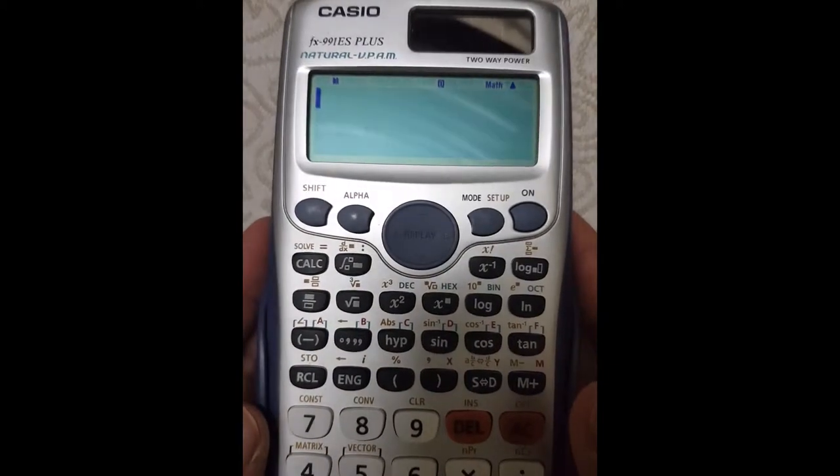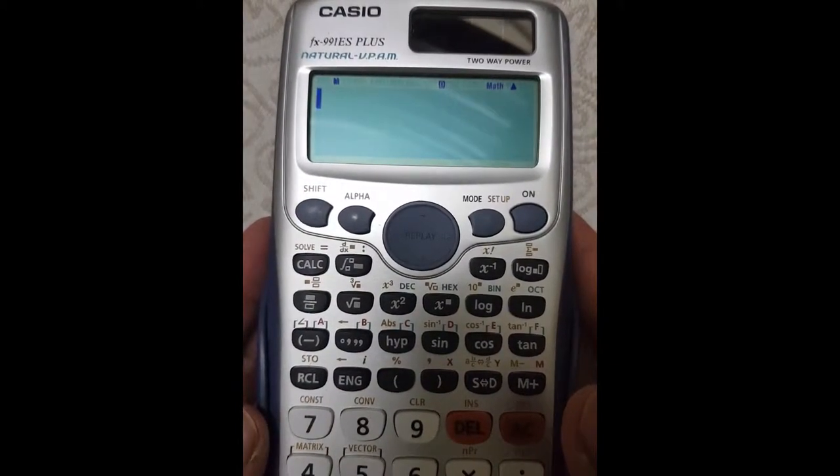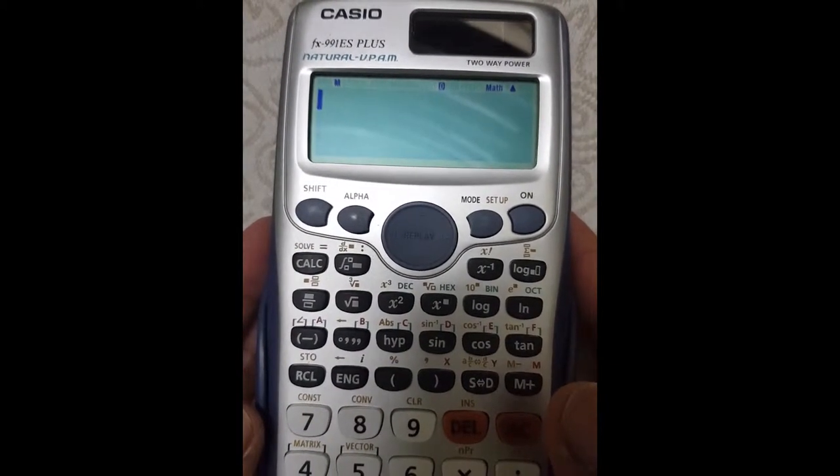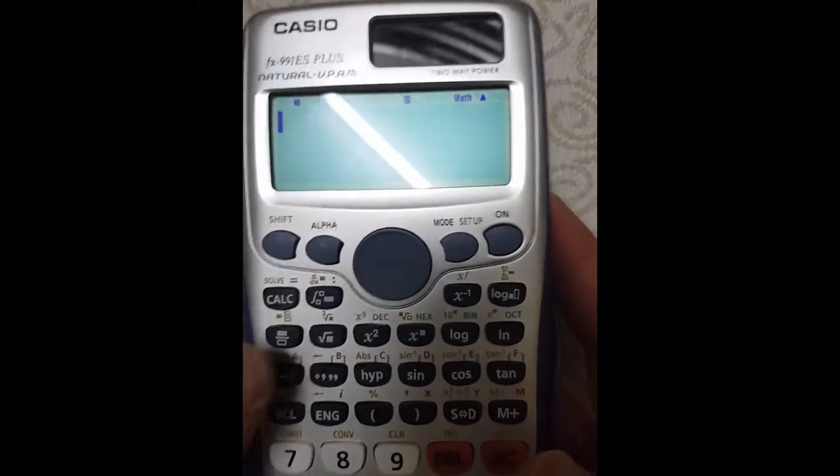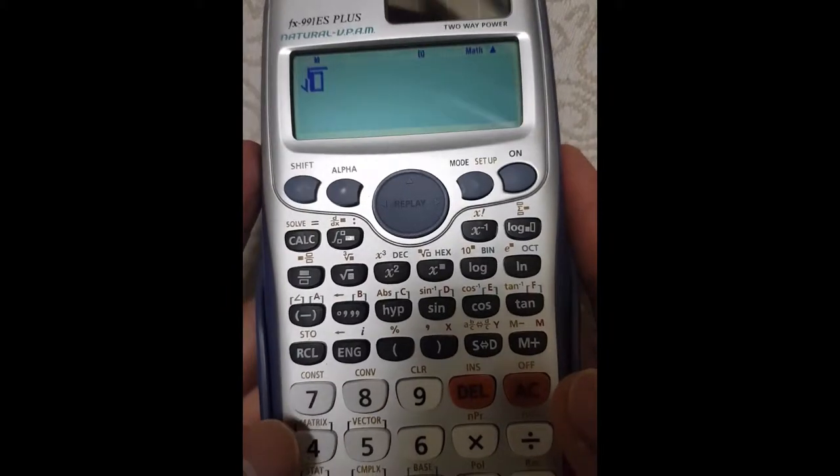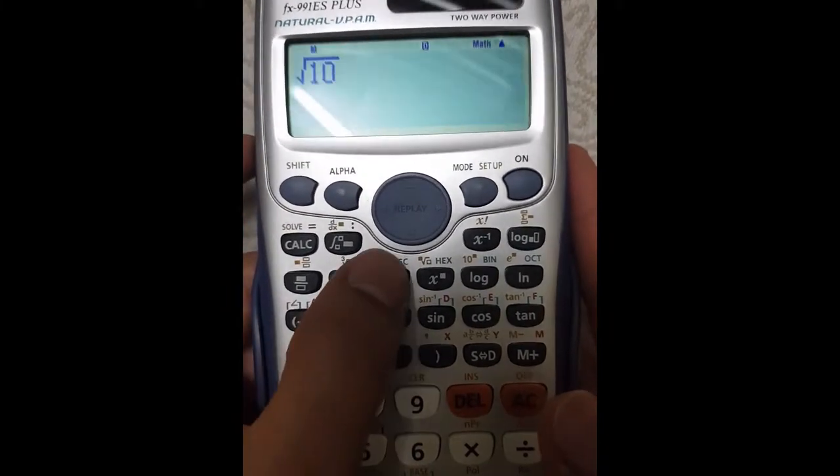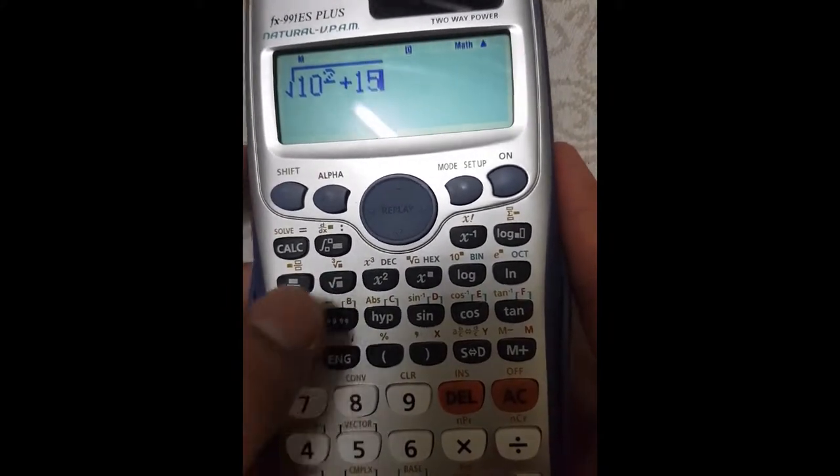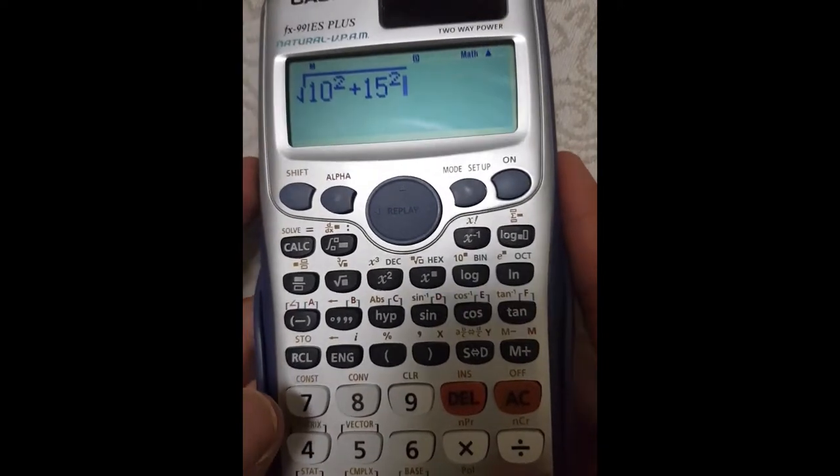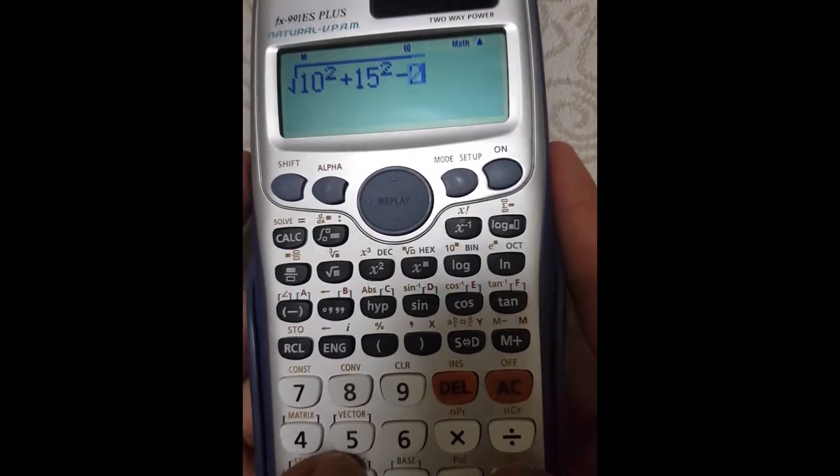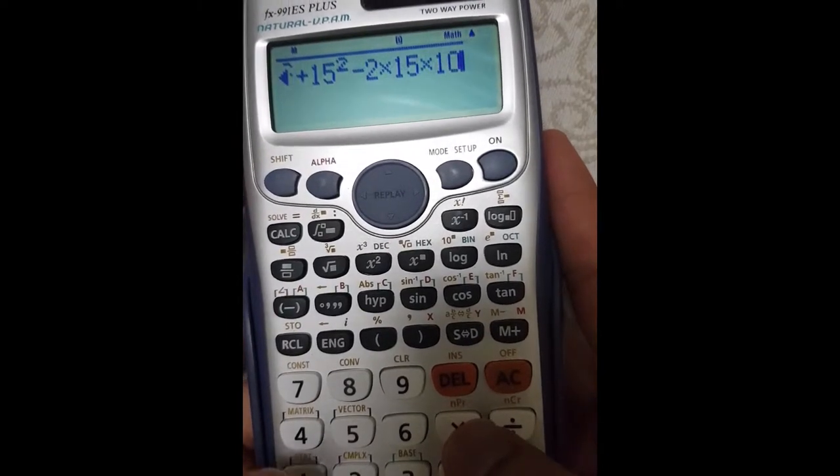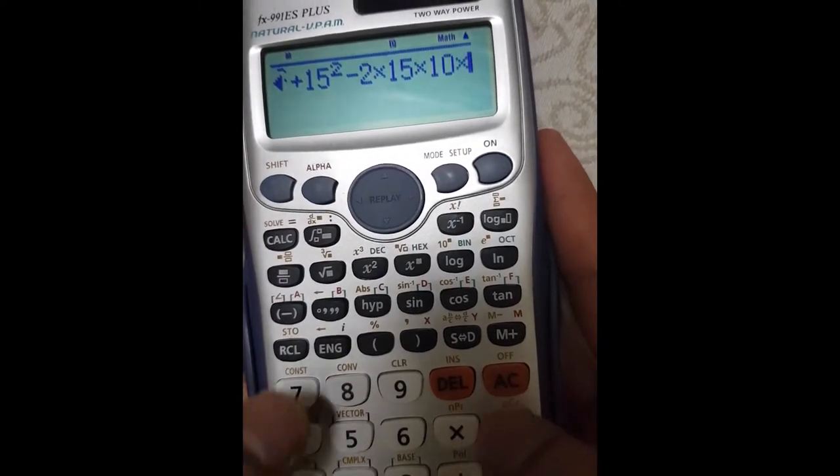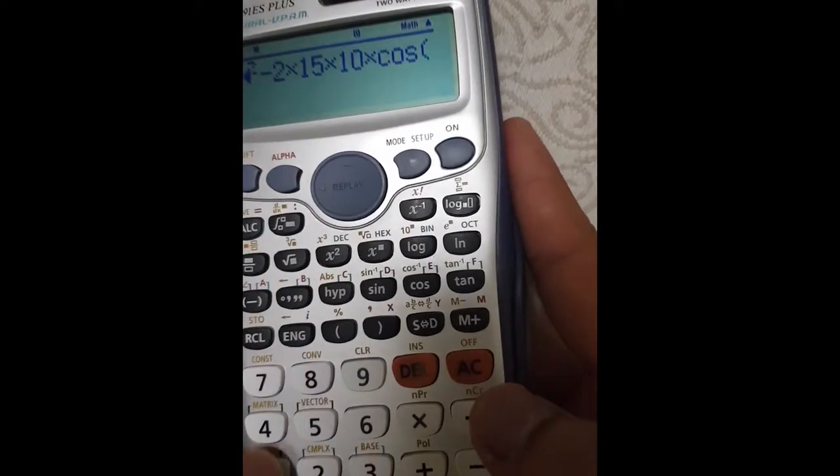Actually guys, earlier I simplified it. I made it 10 squared. I simplified 10 squared, which is 100. But you can put them all on the calculator directly like this. So you just have to do 10 squared plus 15 squared minus. Then you can just do 2 times 15 times 10 times cosine 100.